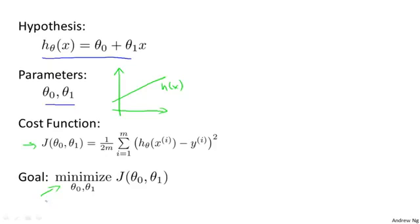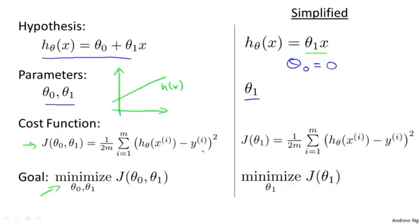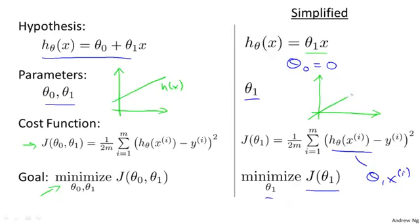For this video, in order to better visualize the cost function J, I'm going to work with a simplified hypothesis function. I'm going to use a simplified hypothesis which is just theta_1 times x — you can think of this as setting theta_0 equal to 0. So I have only one parameter, theta_1, and my optimization objective is to minimize J of theta_1. In pictures, this means choosing only hypothesis functions that pass through the origin, through the point (0, 0).